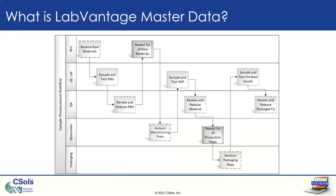We're going to do that for all of our raw materials, then perform our manufacturing steps, which will have some process-dependent gateways that depend maybe on sampling. We release and review material for all our production steps. Finally, we want to output our packaged finished good, test and sample those, and then review and release them so we can ultimately get paid for them. Where we're focusing in this QC lab is that second row where we're doing that sampling and testing.